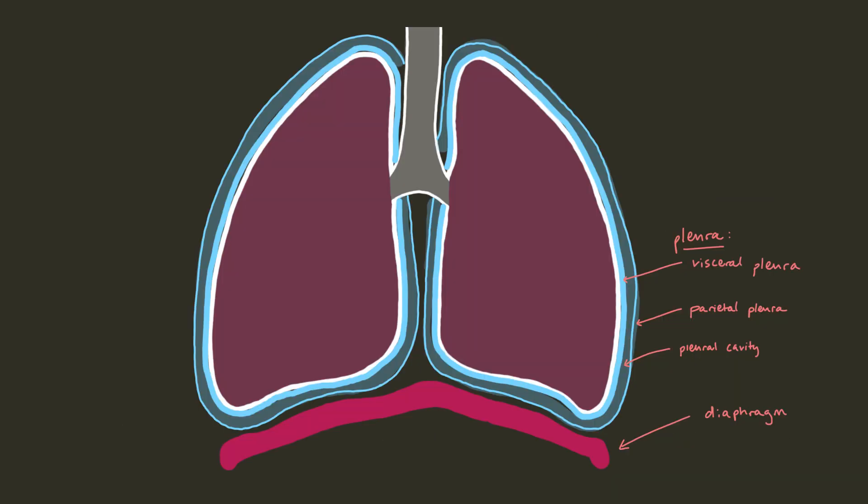Around the lungs, there's a double-layered membrane called the pleura. The inner visceral pleura lies directly on top of our lung tissue, while the outer parietal pleura lines the thoracic wall and the upper face of the diaphragm, which is a big muscle that lies underneath the lungs. Between these pleural layers lies the pleural cavity, which is filled with pleural fluid.